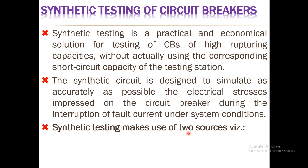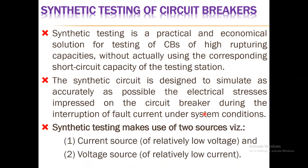The synthetic test makes use of two sources: one is the current source, which is of relatively low voltage, and the other is the voltage source, which is of relatively low current. In other words, these are known as the high current low voltage source and the high voltage low current source. These are the two sources generally found in a synthetic test circuit.